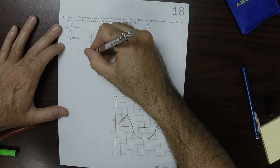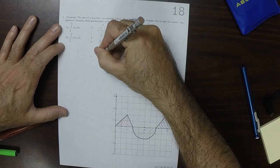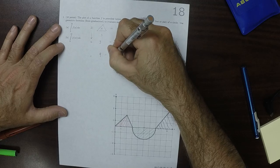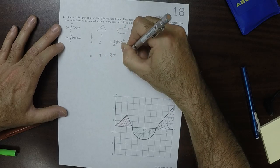Okay, then simplifying, this would be 9 minus 2 pi. So this is the answer to part A.